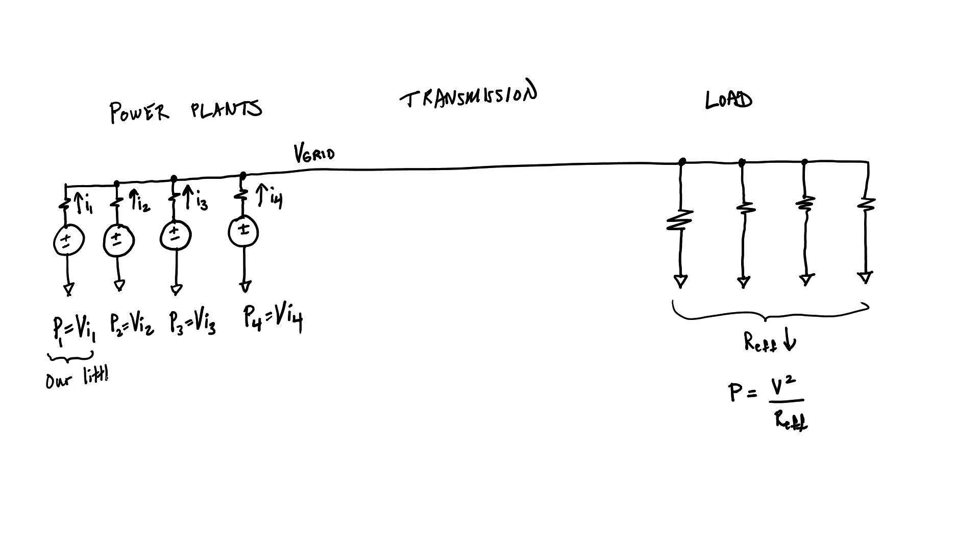All we need to do to ensure that current goes in the correct direction into the grid rather than out of the grid is to make sure that the voltage right here is greater than the grid voltage. Let's call it V1. If V1 is greater than our grid voltage, then power is injected into the grid.